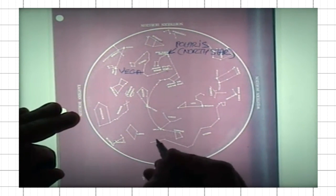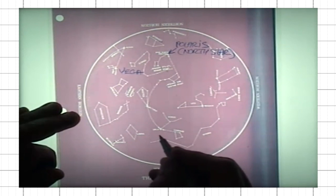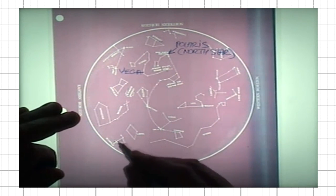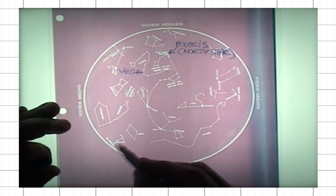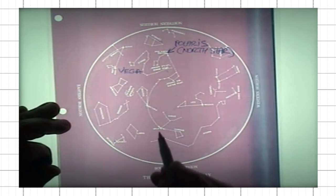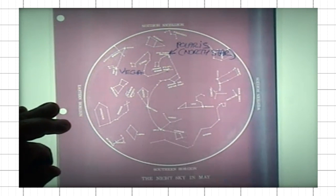Of course, there are others. There is Antares here, part of the Scorpius, which is now low in the eastern horizon. Spica, which is part of the constellation Virgo, and so on.